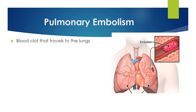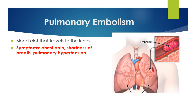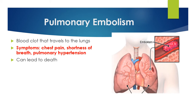Pulmonary embolism is a blood clot that travels to the lungs and is also an emergency. Symptoms include chest pain, shortness of breath, and pulmonary hypertension, and it can lead to death. If you experience these symptoms at the hospital or after discharge, proceed to the emergency room and call the office immediately. Pulmonary embolism will require long-term use of blood thinners and possible additional medical or surgical management.